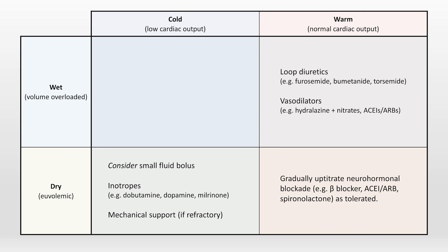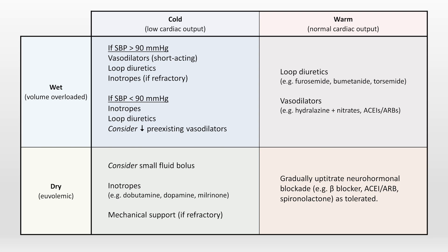In my opinion, the cold-wet patients require the most nuance to treat. If a cold-wet patient has a systolic blood pressure that's relatively high, as in greater than 90, treatment should focus on short-acting vasodilators and loop diuretics, and if refractory to that, employ inotropes. Whereas if the systolic pressure is below 90, treatment should focus on inotropes and loop diuretics first. You can consider decreasing the dose of pre-existing vasodilators, but keep in mind that patients with advanced heart failure often do best with blood pressures that in other situations would seem really low. And once again, if the patient fails to improve with that, mechanical support is the only remaining option.